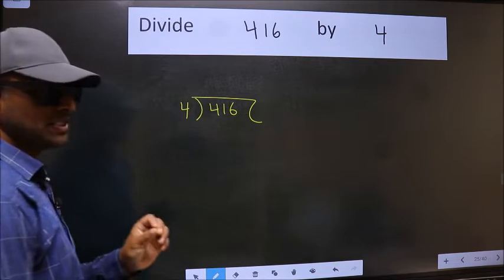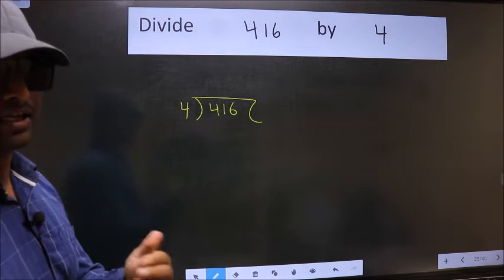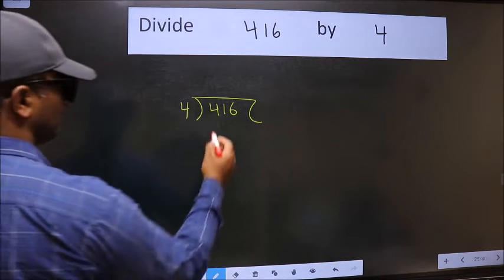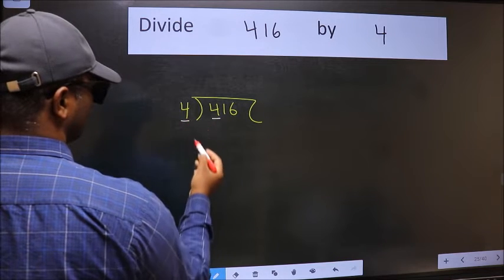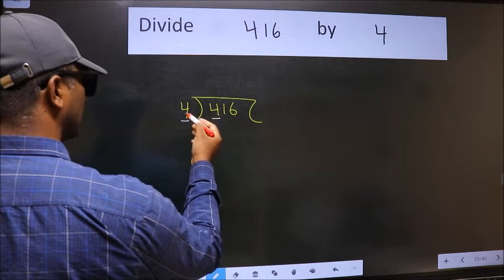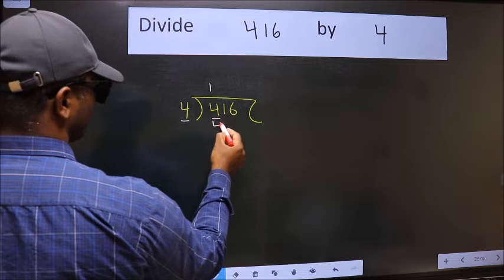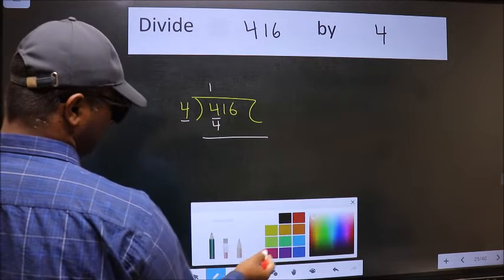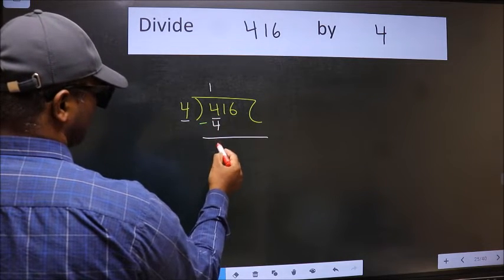This is step 1. Next, here we have 4 and here also 4. When do we get 4 in the 4 table? 4 times 1 is 4. Now we should subtract. We get 0.